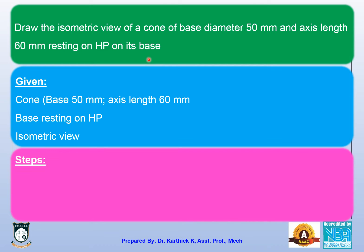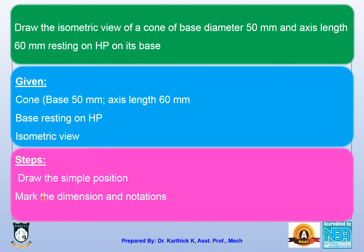The steps to be followed are: first, we need to draw the simple position. Next, we need to give the dimensions and notations. Then we need to start the isometric projection. These are the steps.